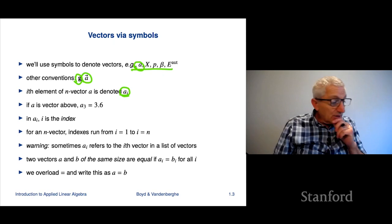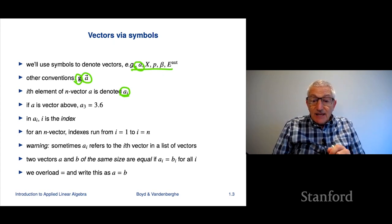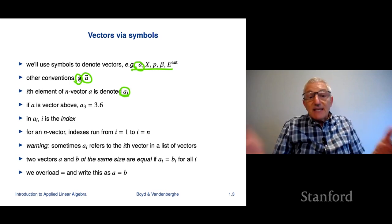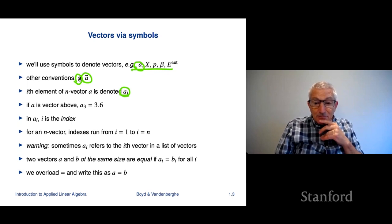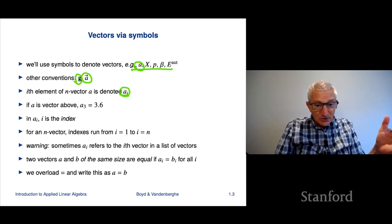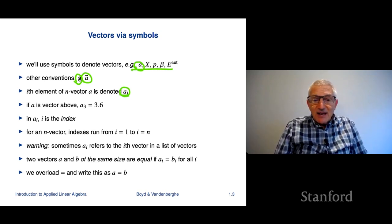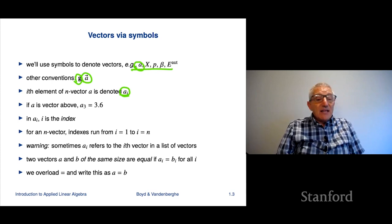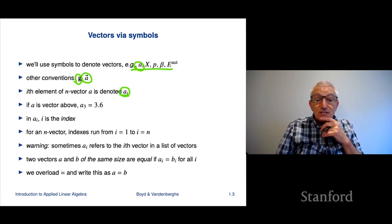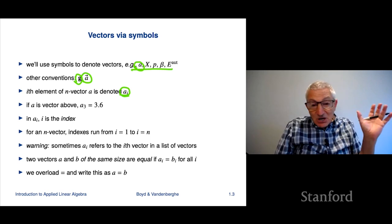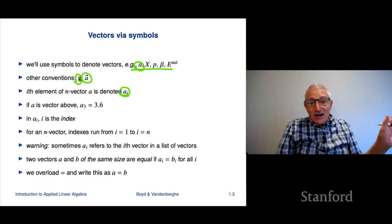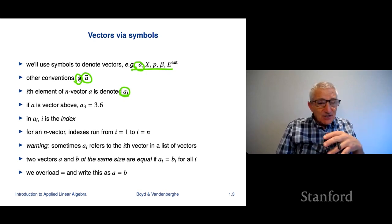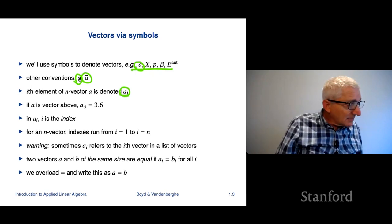The i in a sub i is called the index, because it's an index into the vector. It tells me where do I find the ith element. By the way, this is just a convention, but we typically use as indices, and this is following centuries of mathematical tradition, indices are typically denoted by i, j, k, l, n, m. These are just conventions. You can use anything you like to denote an index, but these are the traditional ones. Vectors are typically denoted a, b, c, or p, q, z, y, u, v, these kinds of things. Again, these are just pure conventions.